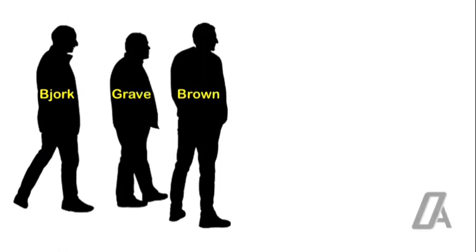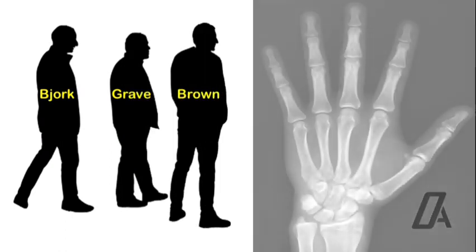Bjork, Grave, and Brown divided the skeletal development in the hand-wrist area into nine stages.